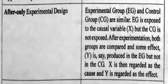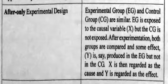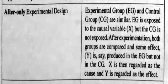After-only experimental design: The experimental group (EG) and control group (CG) are similar. EG is exposed to the causal variable X, but CG is not exposed. After experimentation, both groups are compared and some effect Y is produced in the EG but not in the CG. X is then regarded as the cause and Y is regarded as the effect. Before-or-after experimental design: The effect is measured both before and after the exposure of groups to the experiment. The difference produced after the experiment is said to be the effect Y of the experimental variable X. This design provides evidence of concomitant variation between X and Y.